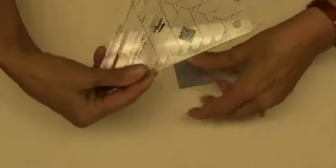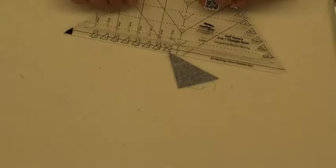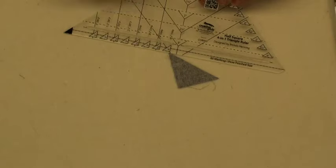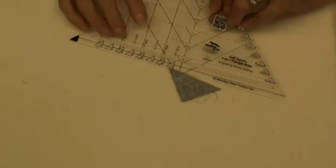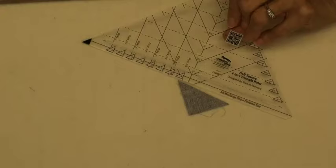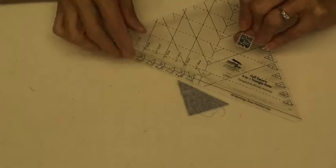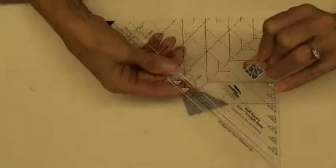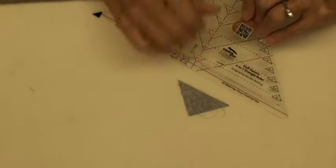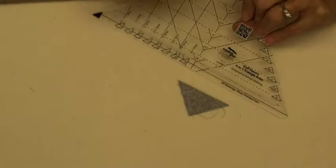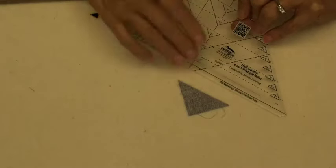The last ruler that I have to show you is the Creative Grids half square four in one triangle ruler. And good news guys, I just found this in my drawer. I hadn't even opened it. So I opened it and now I'm using it and I love it. So what you do on this, you still do all of your half square triangles the exact same manner, but trimming is a little different.